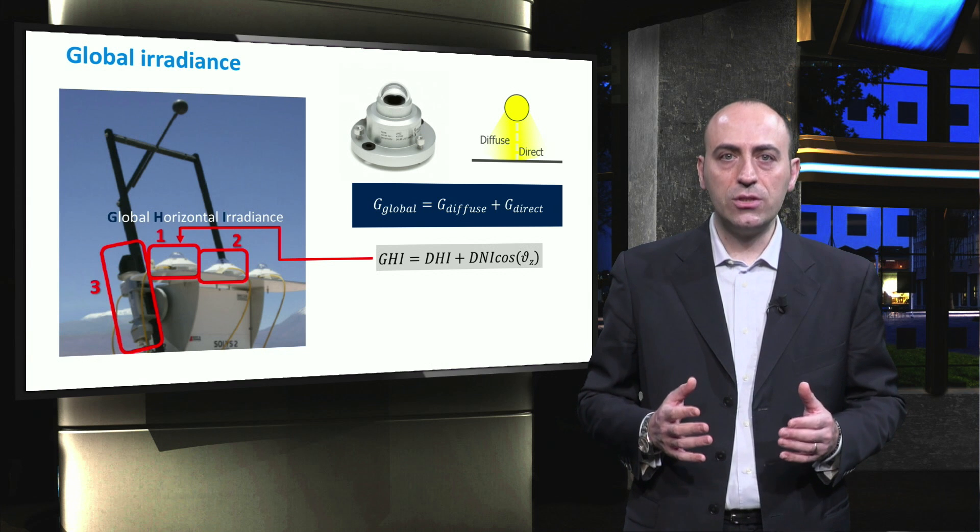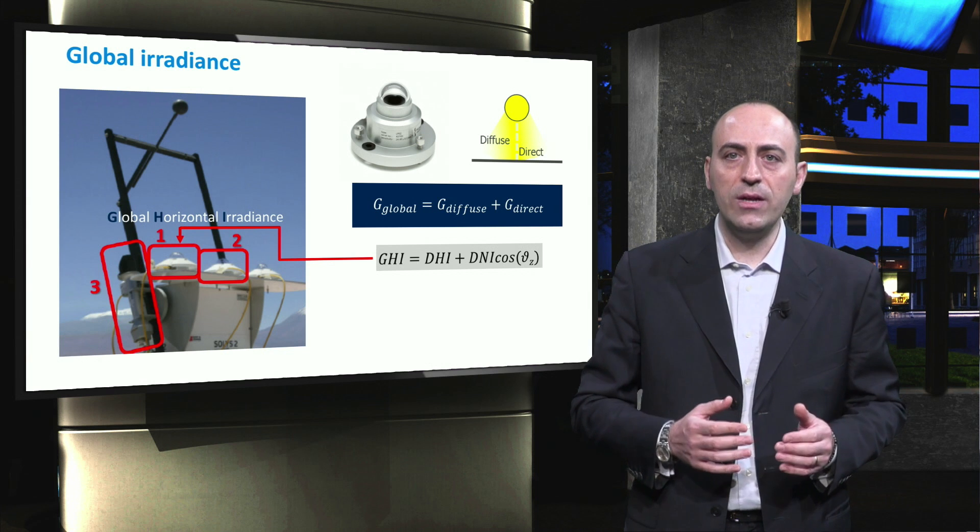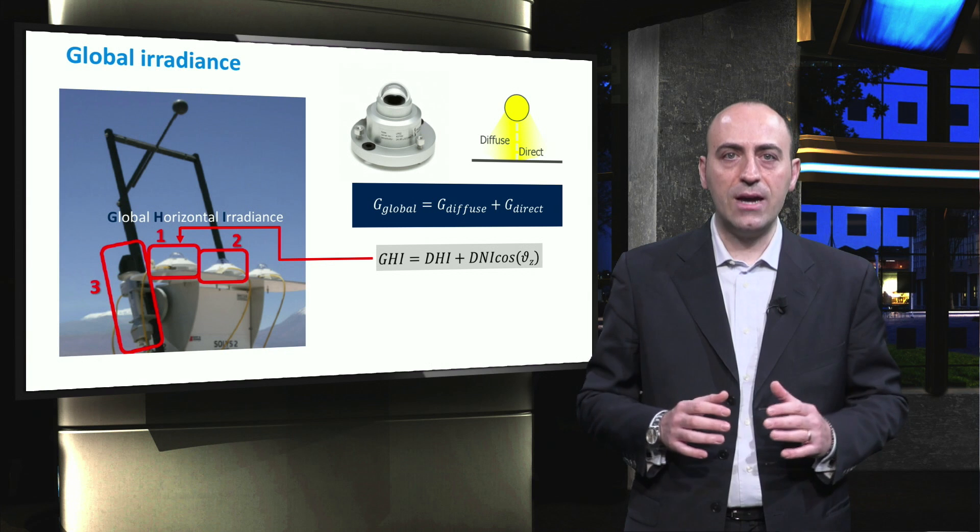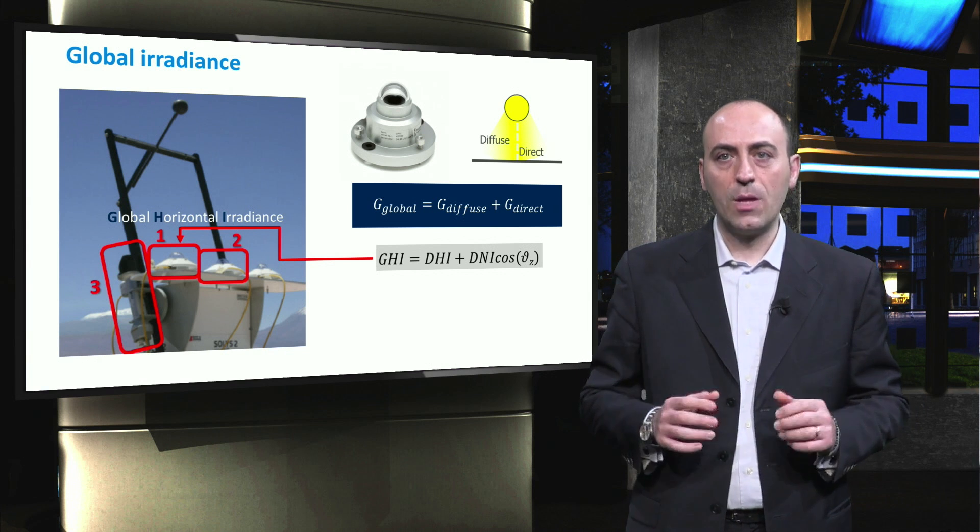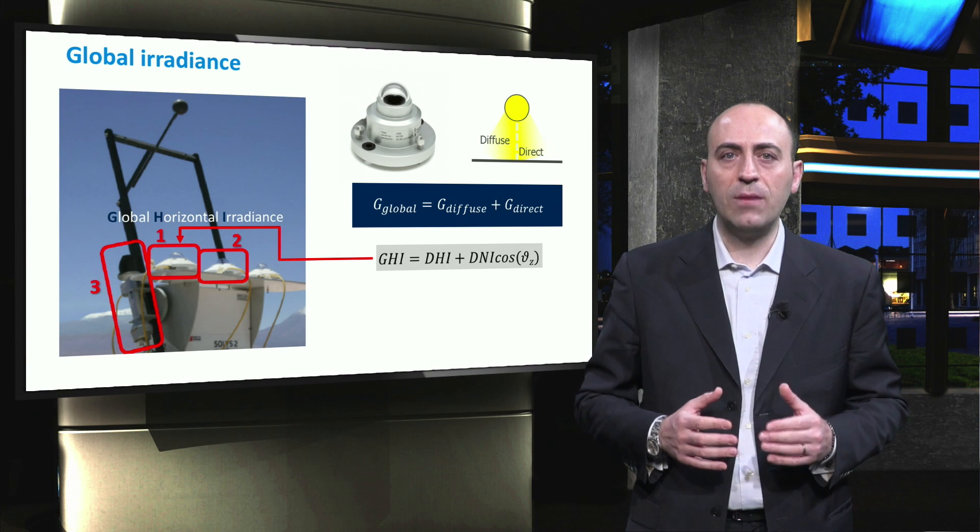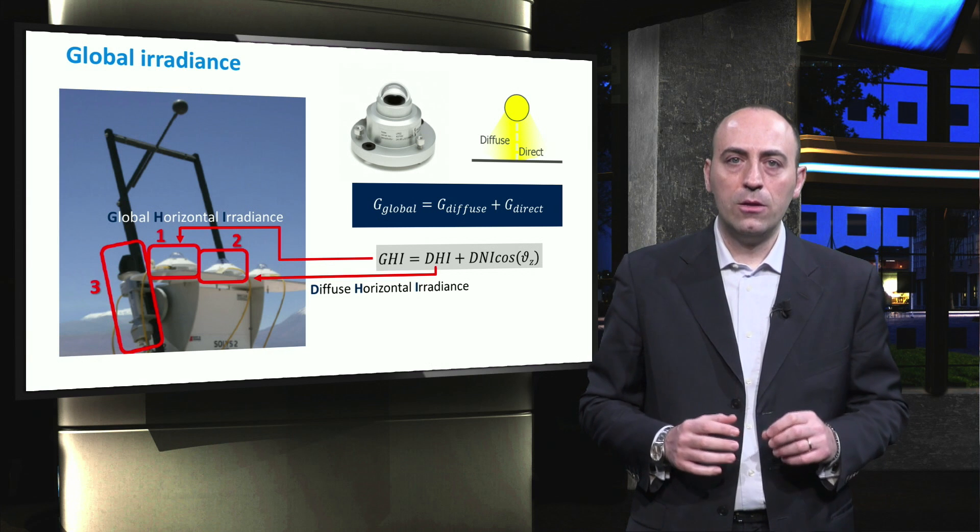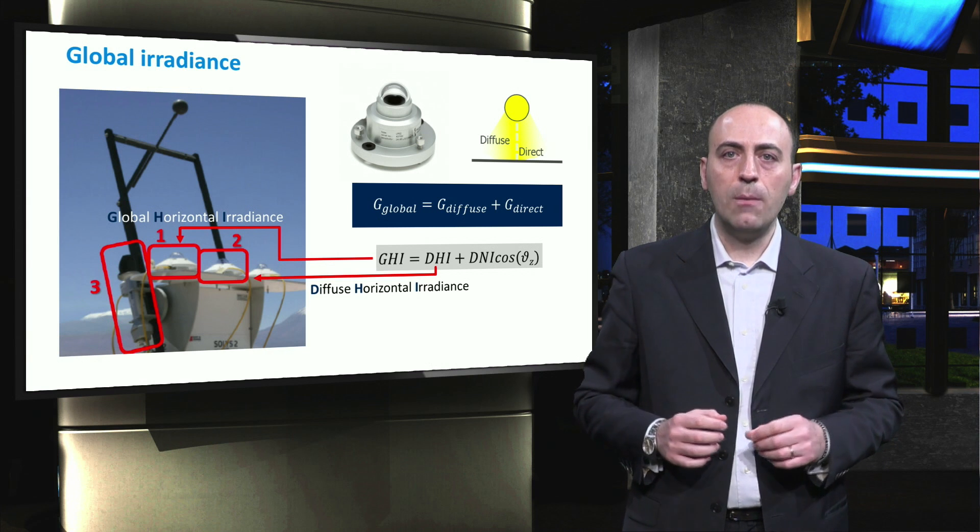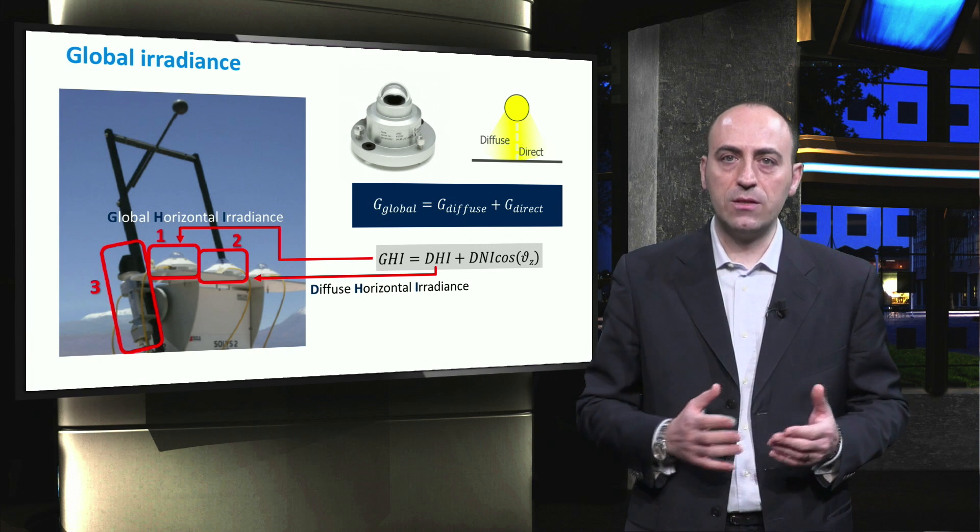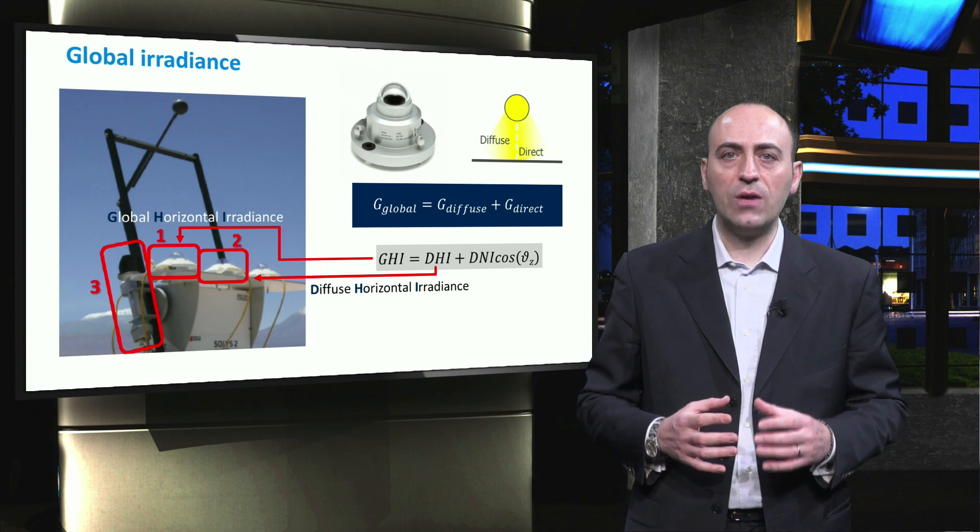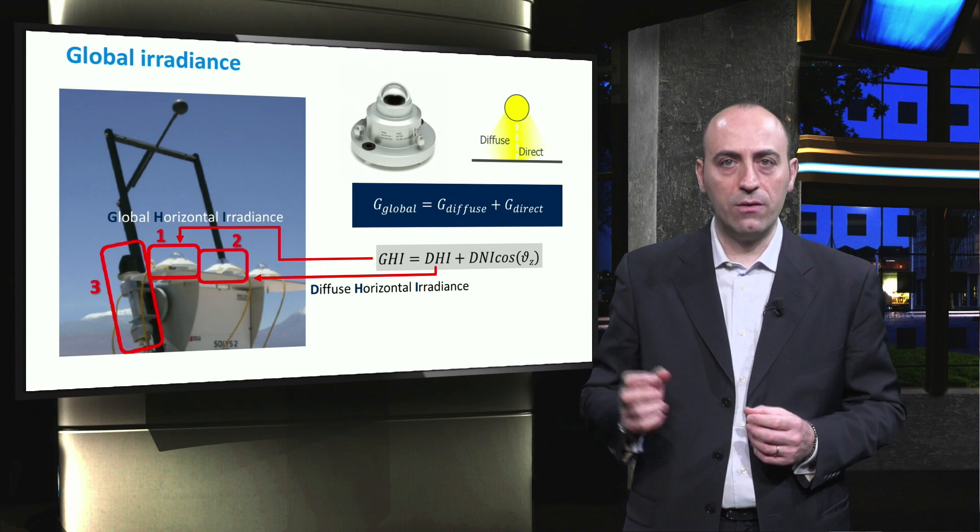The GHI is measured with the pyranometer over here, and it is called the Global Horizontal Irradiance because the pyranometer has a very large eyesight, so it can get the horizon and the whole hemisphere on top of it. Of course, this should be set as much as possible parallel to the ground where you will actually install the PV system. The pyranometer in the red box number 2 measures instead the diffuse horizontal irradiance. It has the same configuration as the previous one, but a shading disk obstructs the direct irradiance. An embodiment of the shading structure is the black ball here on top.